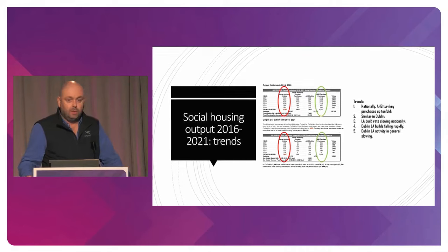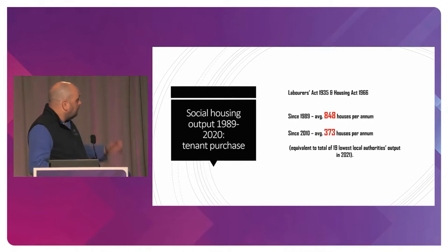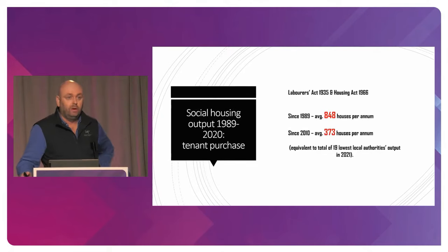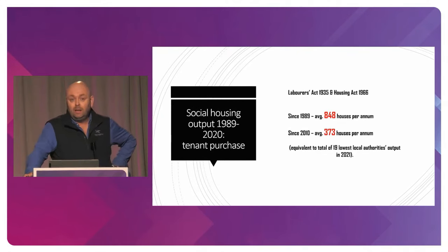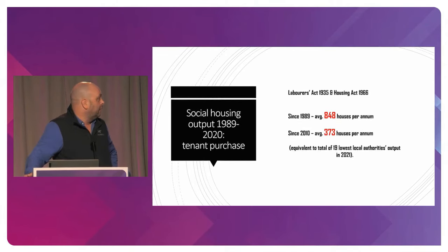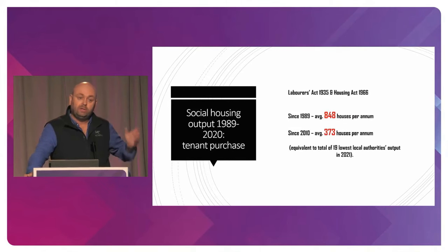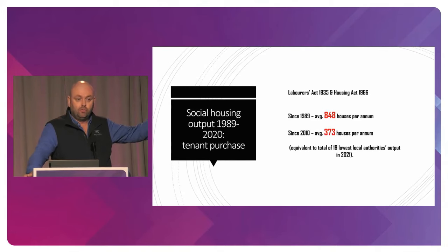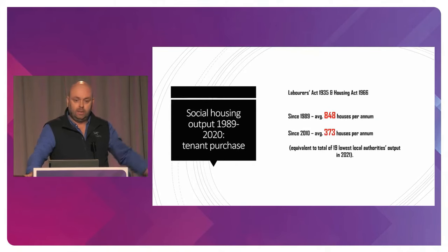We should also remember that the 4,500 houses is the gross addition to stock. We have to remember we're also selling off housing through tenant purchase. Since 1989, we're selling about 850 houses per annum, and even in the last 10 years, we're selling about 373 houses a year to tenants. So out of the 1,400 direct-build local authority houses last year, you can take pretty much 400 off that because we're selling so many to various people.